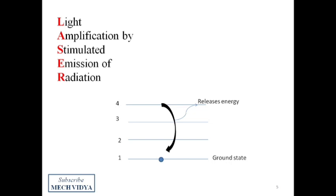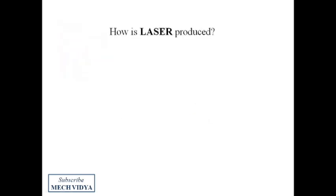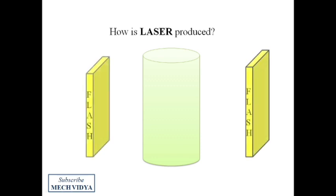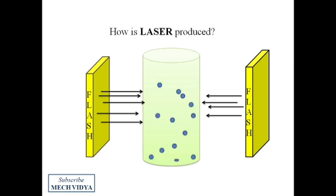So to create a laser beam we will use a ruby crystal. This is our ruby crystal. Now we will use high power flash lamps to throw light energy in the crystal and as a result the electrons which are in lower energy states will take this energy and start jumping to higher energy states. After some time while coming back to the ground state they will release the light energy in the form of photons.